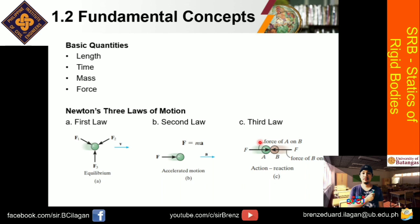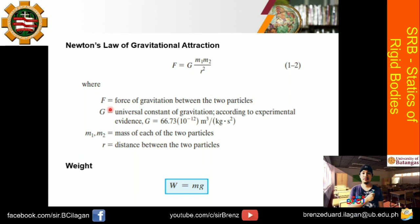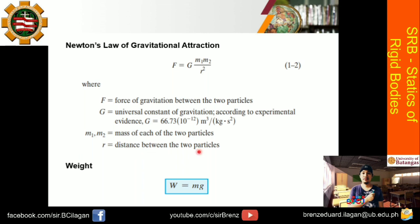So aside from that, we have the Newton's law of gravitational attraction. So I think familiar pa kayo dito sa equation na to. So, from where yung force of gravitation between the two particles F, denoted by capital letter F, that is equals to G, the capital letter G. So ano yung G? G is the universal constant of gravitation. According to experimental evidences, yung value nya is 66.73 times 10 to the negative 12 cubic meter per kilogram second squared. So this is the product of M1 and M2 — that is the mass of each of the two particles — and R squared, that is just the distance between the two particles. So again, this is just a direct substitution, but yung G has a constant value of 66.73. Try to memorize this, but I believe this value is nakalagay din sa calculator niyo, constant value G.